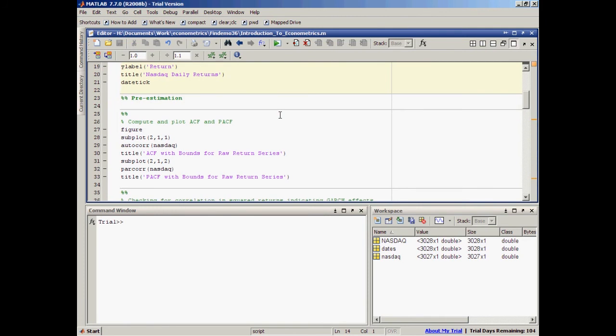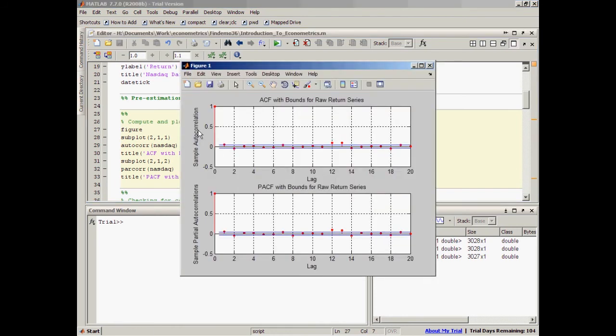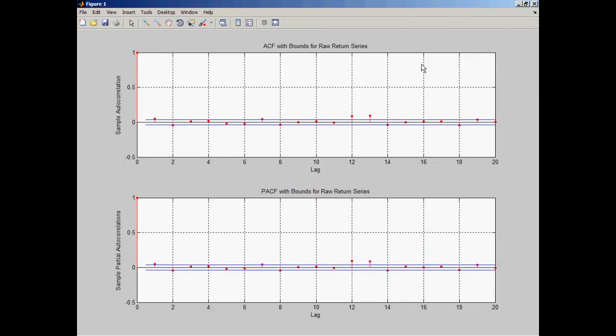In the next cell in my code, I will use functions autocorr and parcorr to compute and display the sample autocorrelation and partial autocorrelation of the returns, and the upper and lower standard deviation confidence bounds. From these figures, there seems to be a little indication that we need to use any correlation structure in the conditional mean.